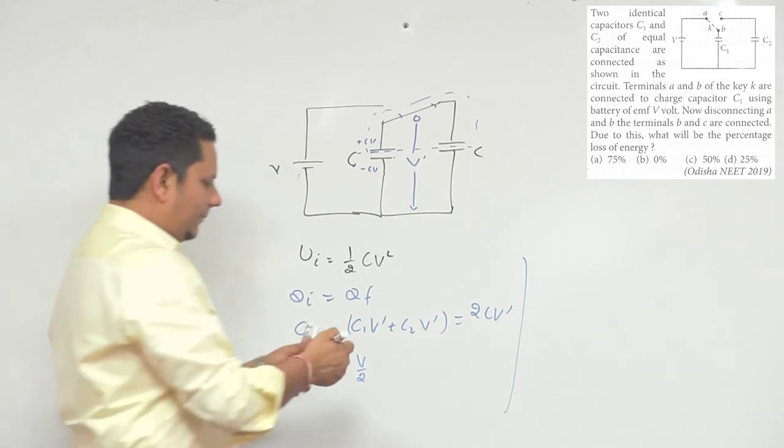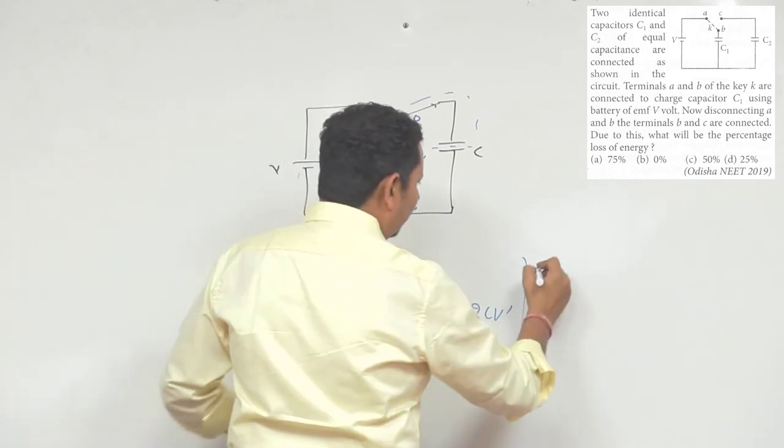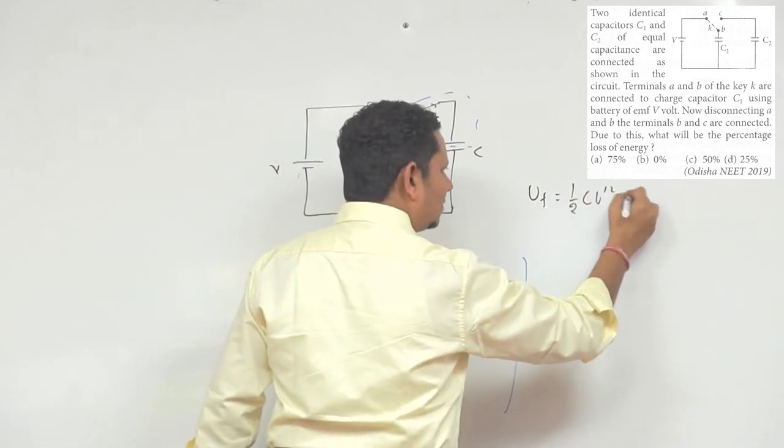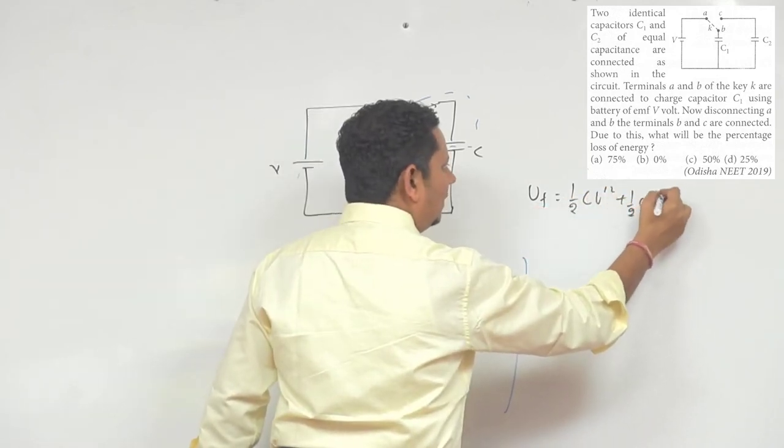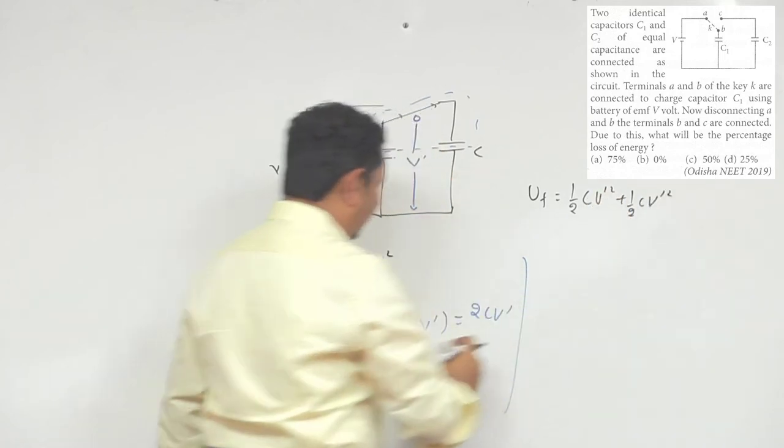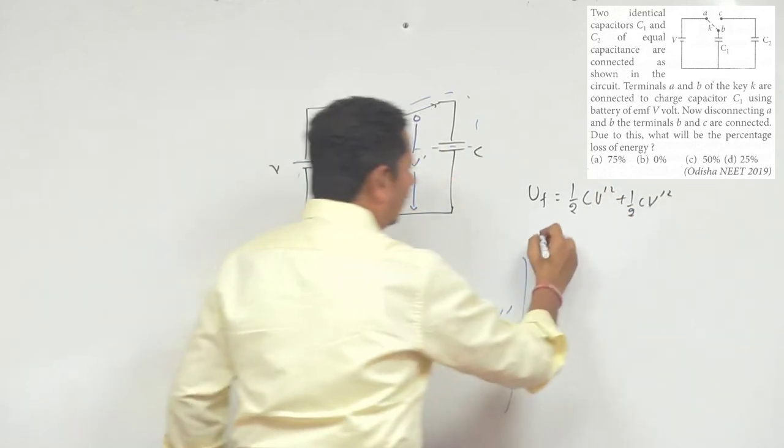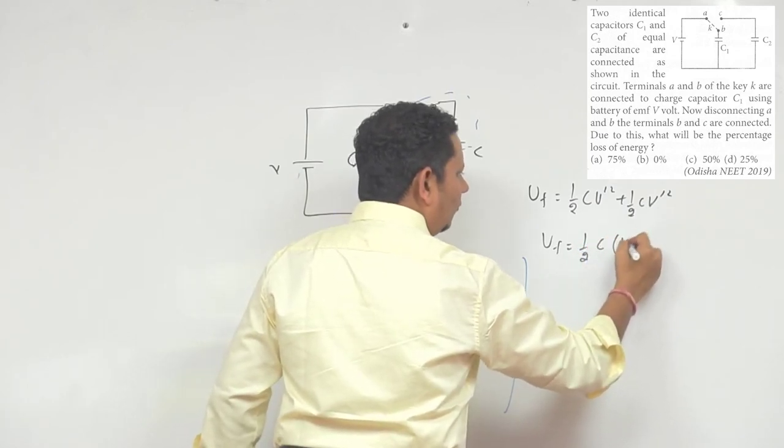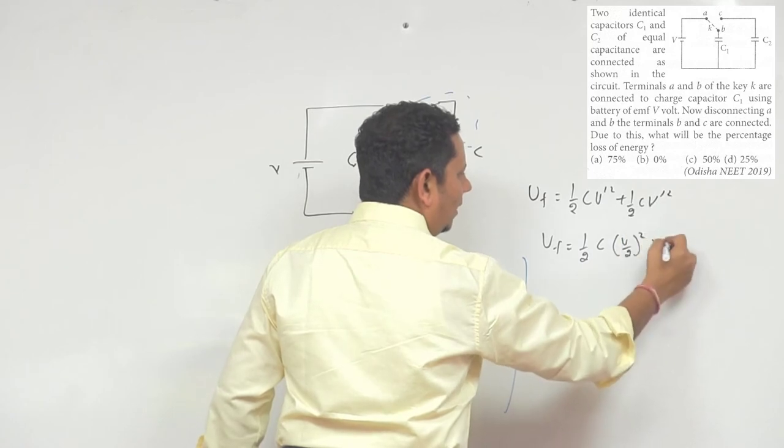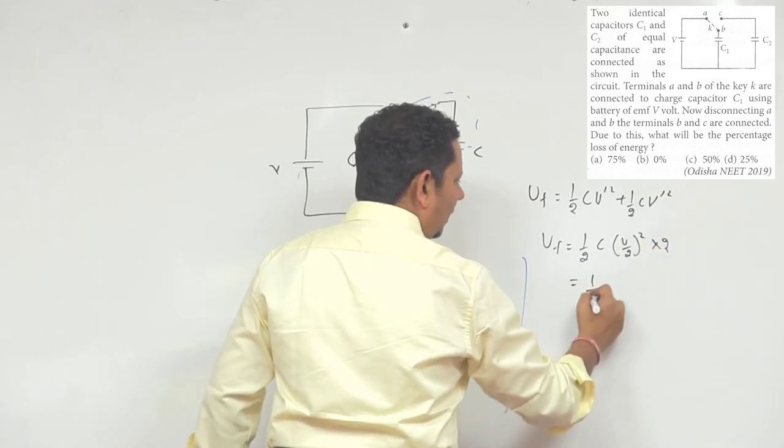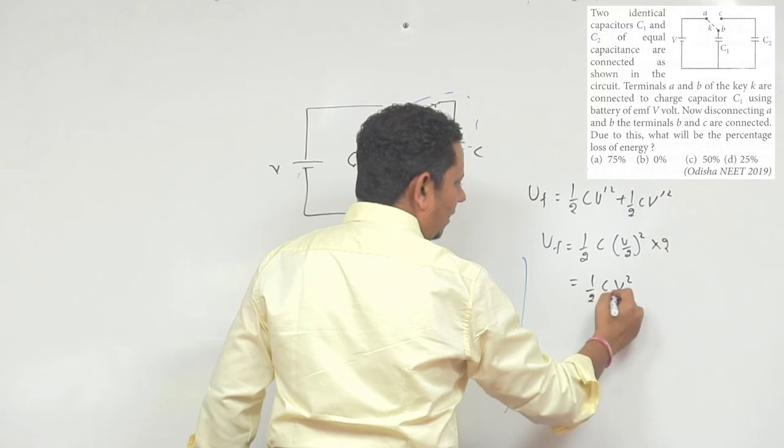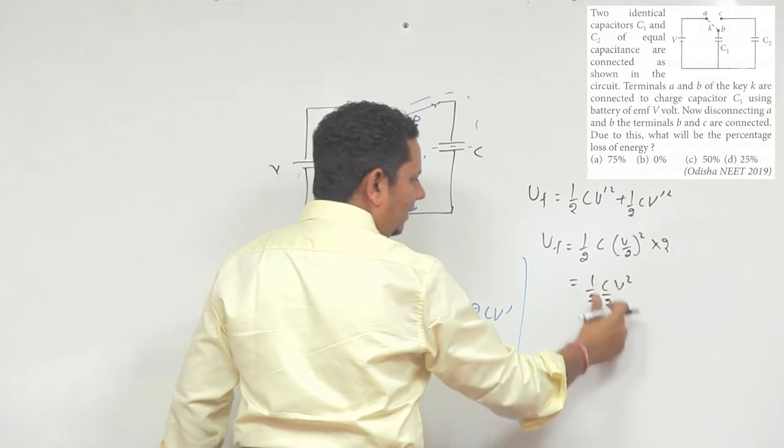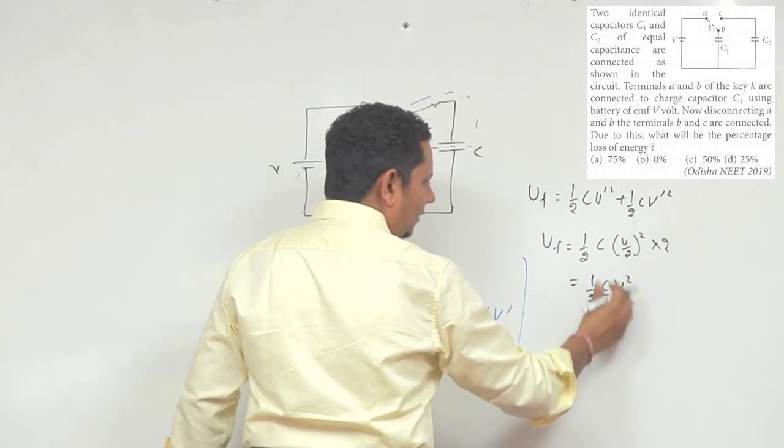Now we just need to calculate final energy. Final energy will be half C V dash square plus half C V dash square. V dash is already V by 2, so your final energy will be half C times V by 2 square multiplied by 2. So this value will be half C V square by 2, which is 1 by 4 CV square.